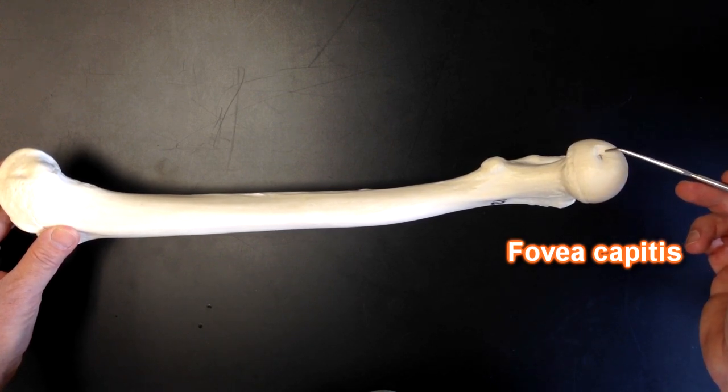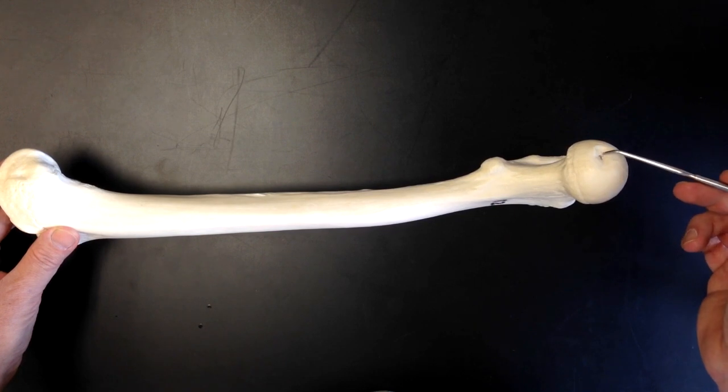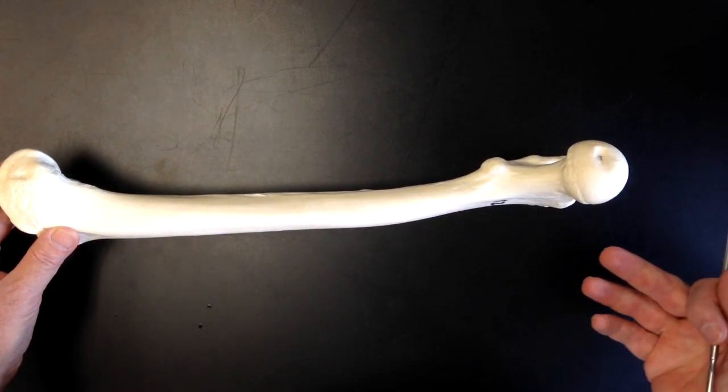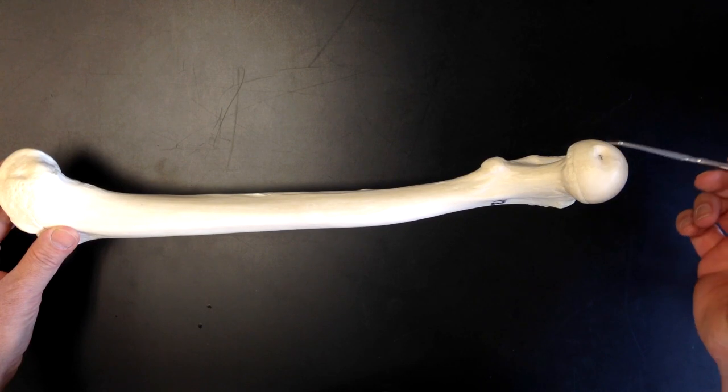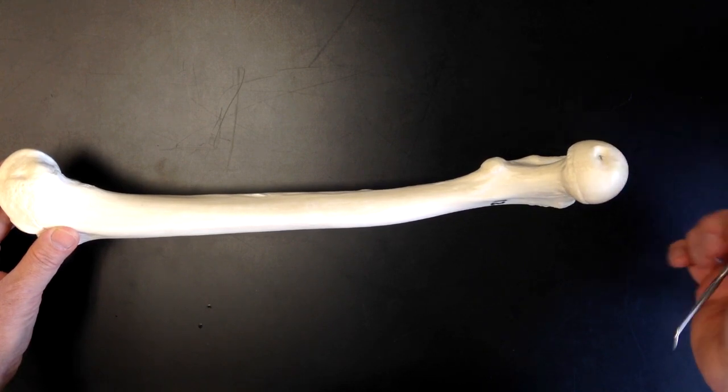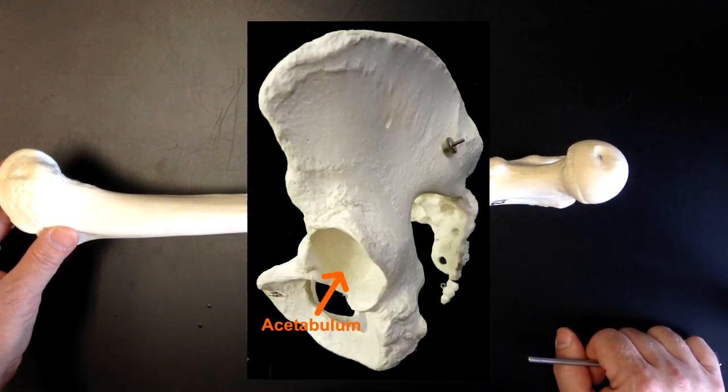So this little pit right here in the head of the femur is going to be for the attachment of the ligamentum teres or the round ligament of the femur, and that's going to help to anchor the head of the femur in the acetabulum.